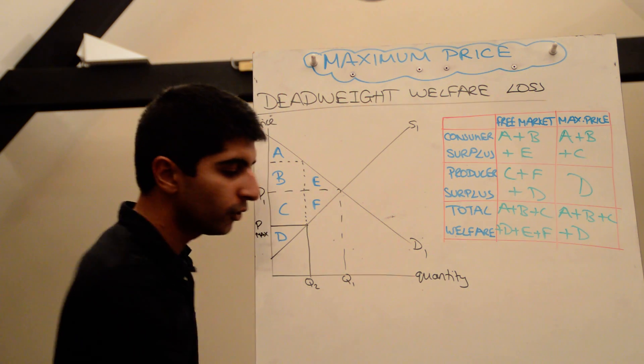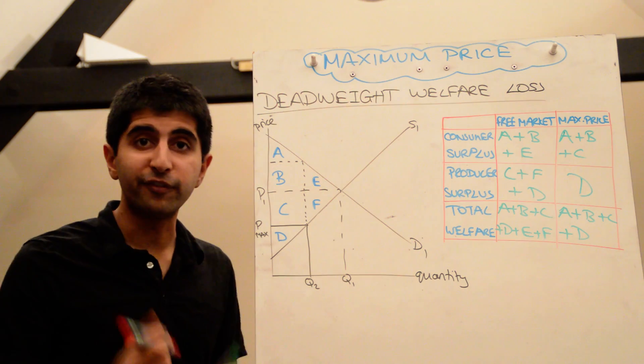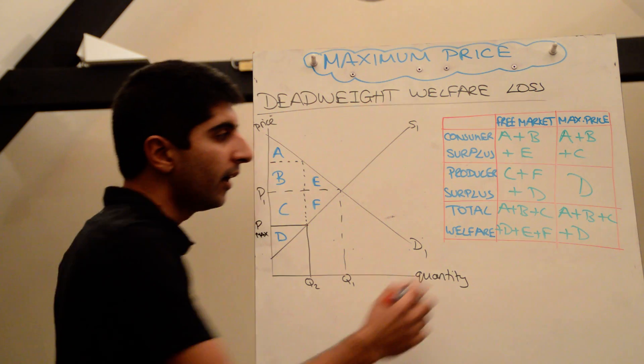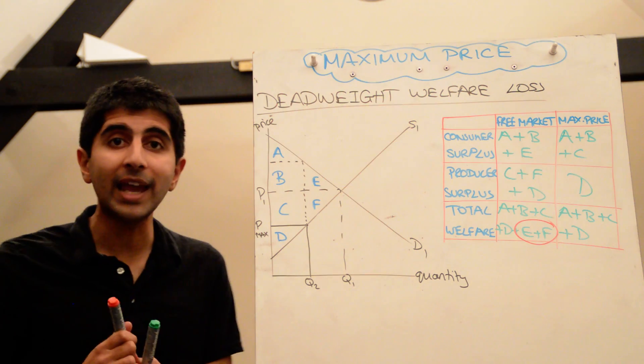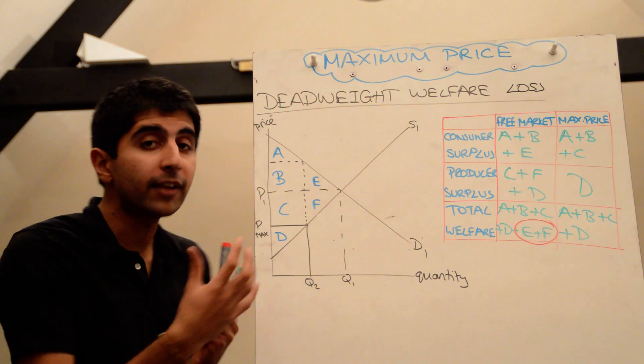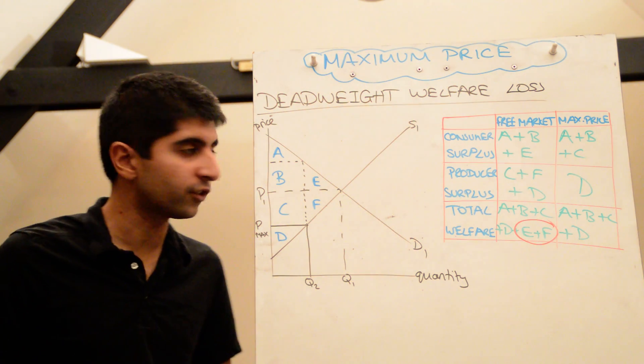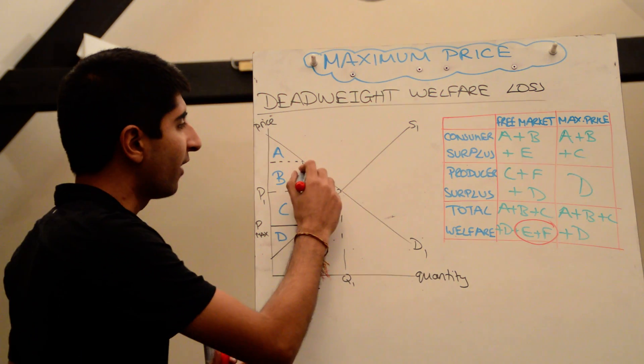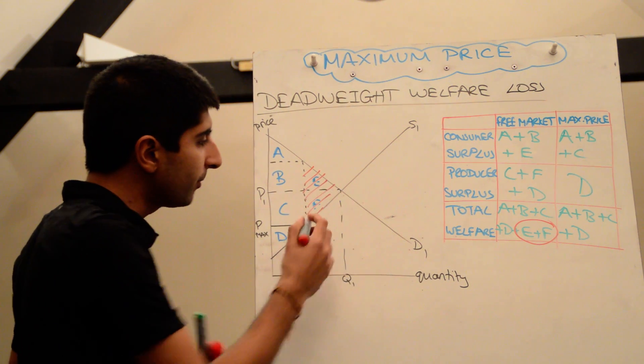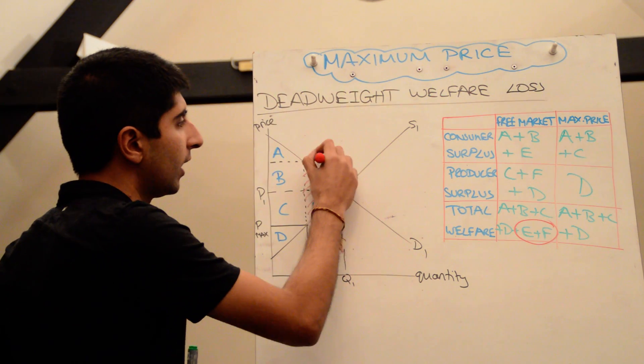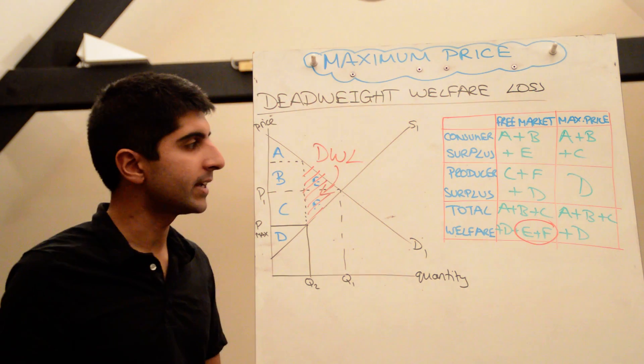And if we compare our total welfare to what we had before our maximum price, we'll realize there are two bits of welfare that society was gaining in the free market which now, as a result of the maximum price, are being lost. And they are areas E and F. So lump those two together, we get a triangle here which represents the deadweight loss to society.